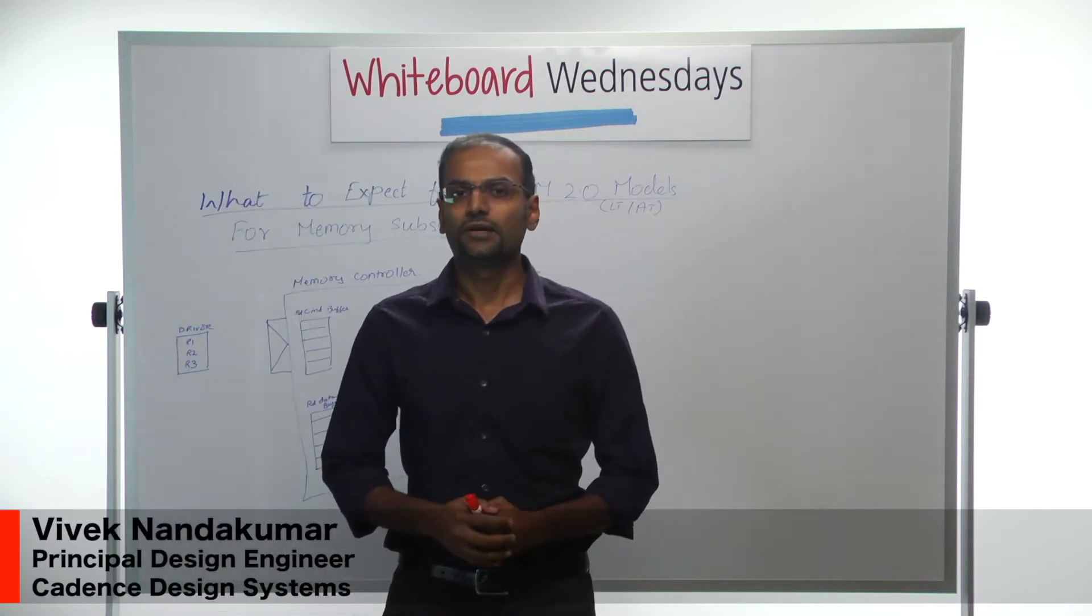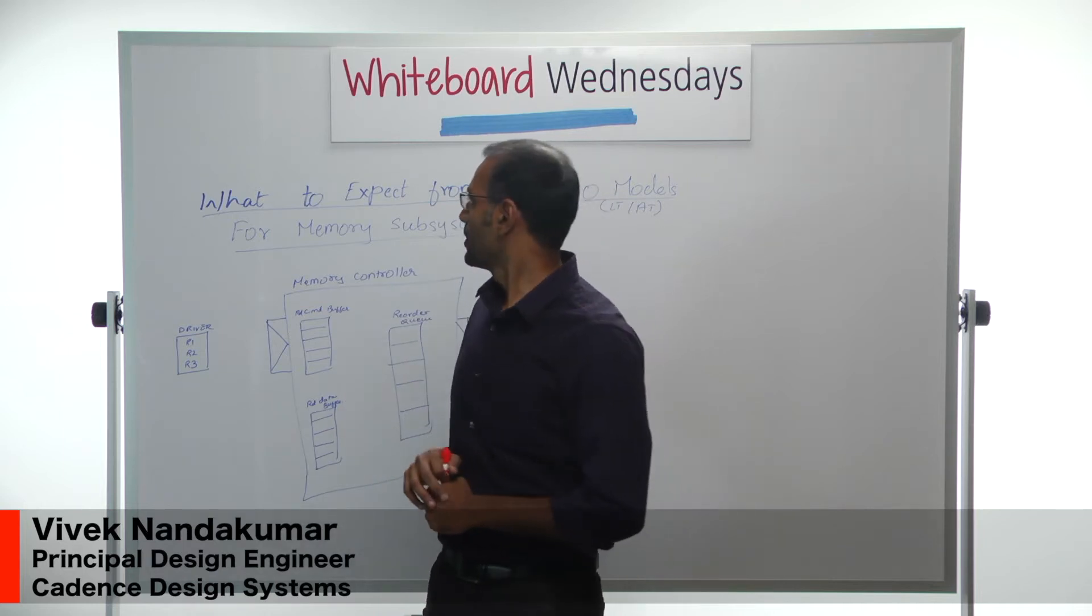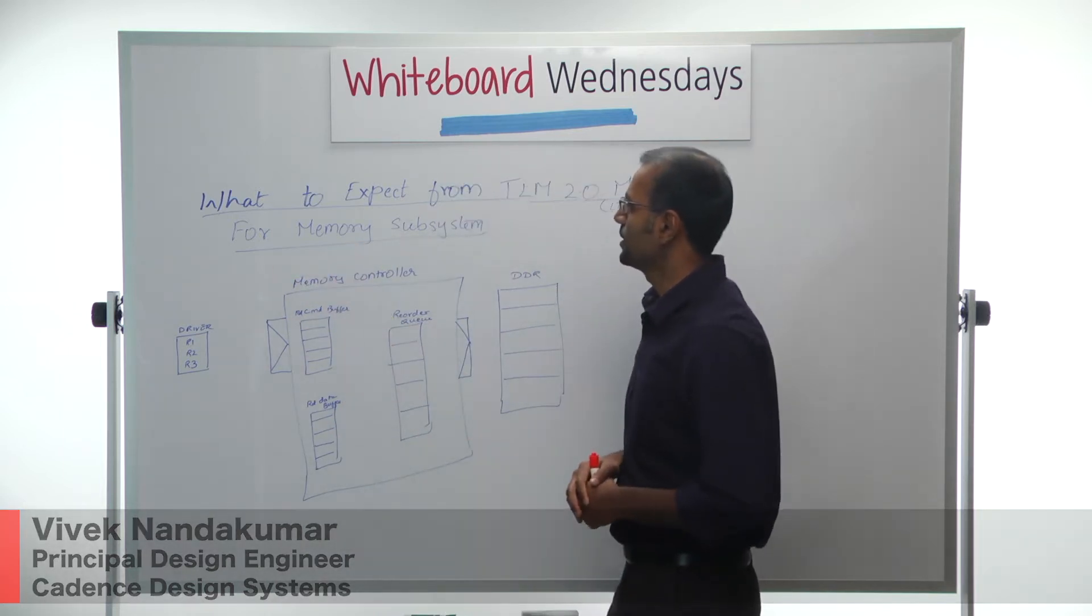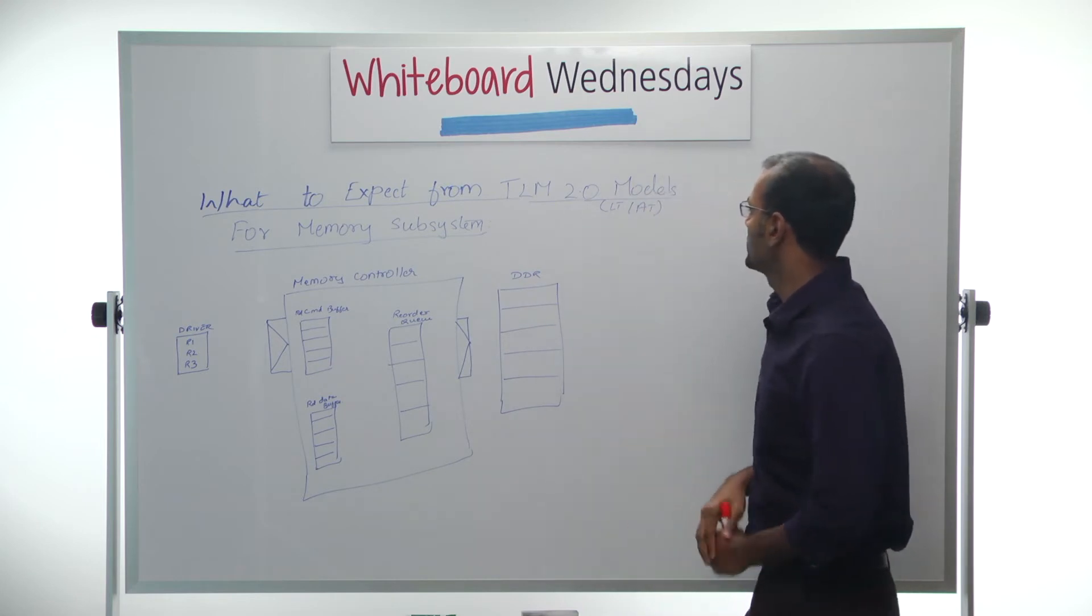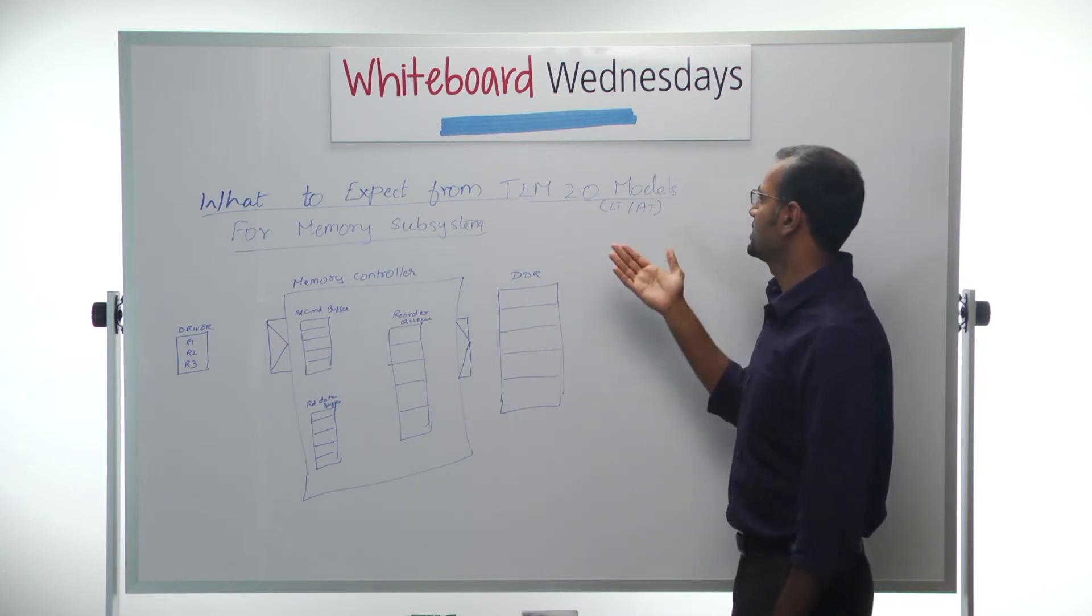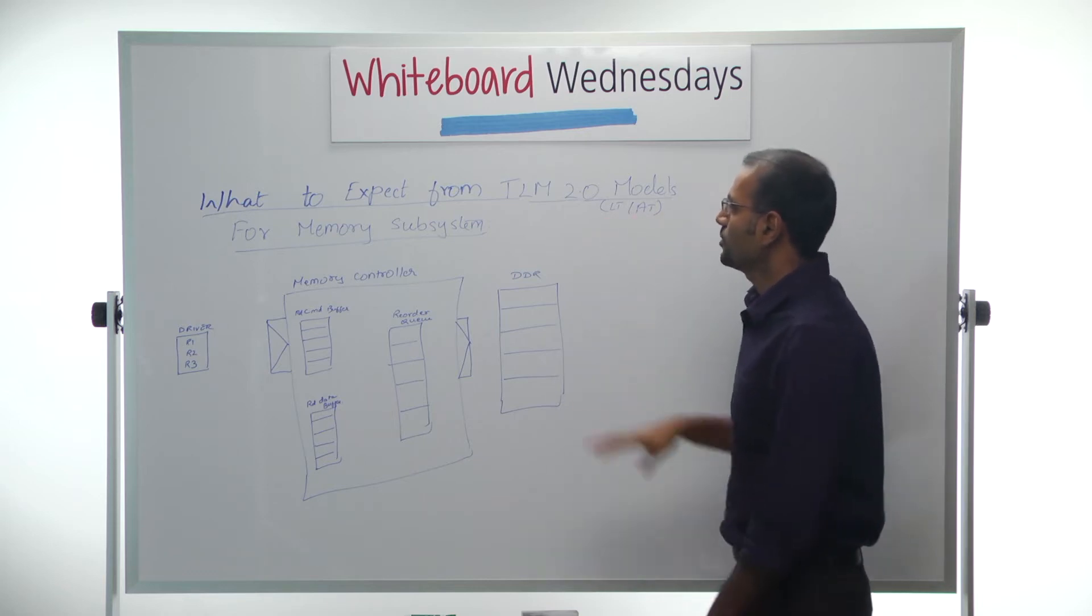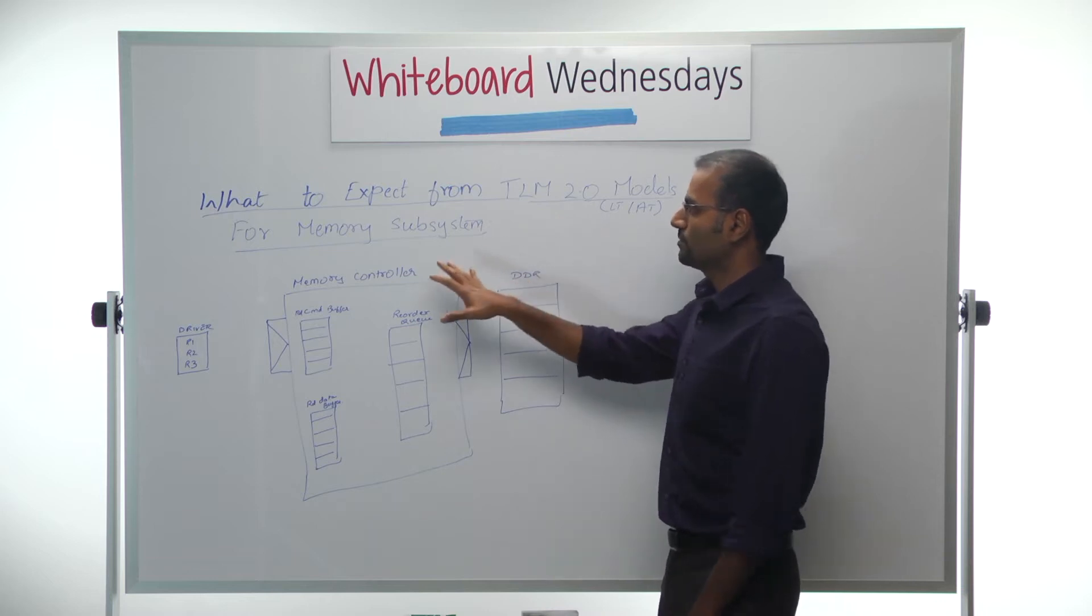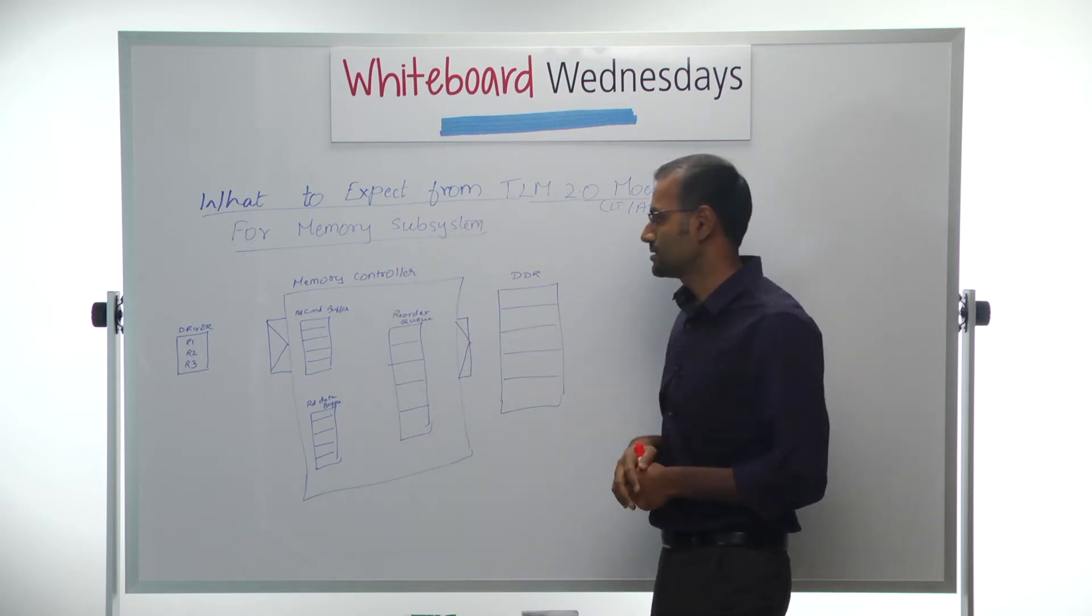Hi, I'm Vivek Nandakumar from Cadence. I work in the design IP group and I'm here to talk about what to expect from a TLM 2.0 model or models, which comes in two flavors, the LT and the AT, LT being loosely timed and AT being approximately timed. We're going to talk about these models from the context of a memory subsystem and memory subsystem TLM 2.0 models.